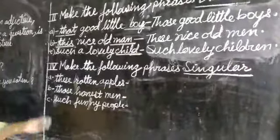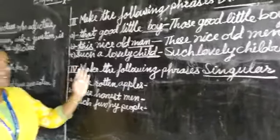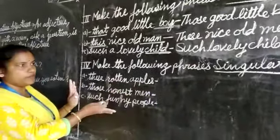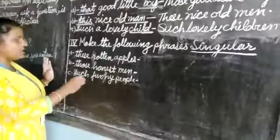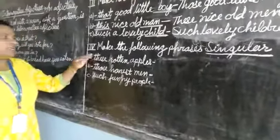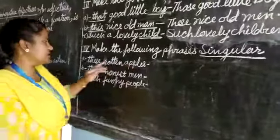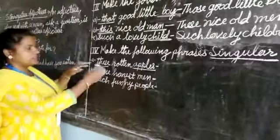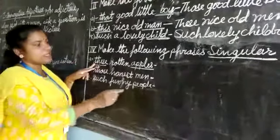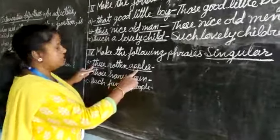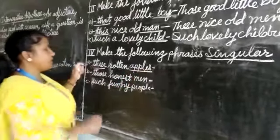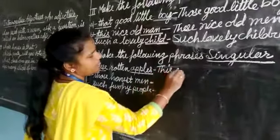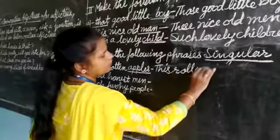Now we will see the next exercise: Make the following phrases singular. These phrases are in plural form and we will change them into singular. For example: 'These rotten apples.' Here, these and apples are in plural form. The singular of these is this, and the singular of apples is apple. So our answer will be: this rotten apple.